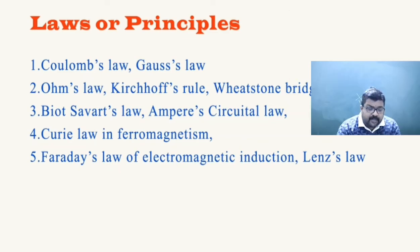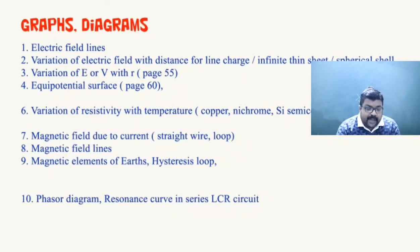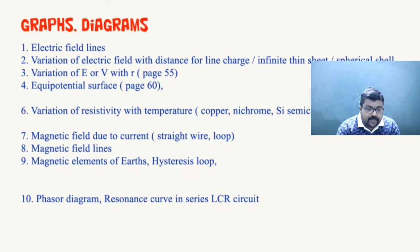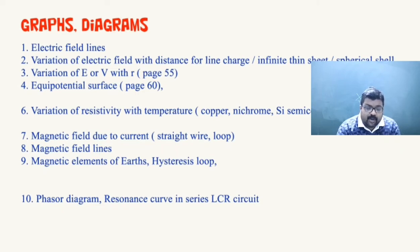Next come graphs and diagrams. Starting from electric field lines. Variation of electric field with distance for a line charge, infinite thin sheet, and spherical shell. Variation of electric field or electric potential with distance from the charge distribution. Equipotential surfaces — this is on page number 60. Variation of E or V with R is given on page number 55. Variation of resistivity with temperature for copper, nichrome, and silicon. Magnetic field due to a current-carrying straight wire and loop.